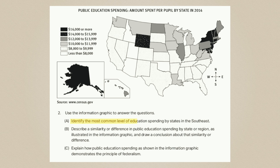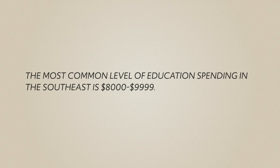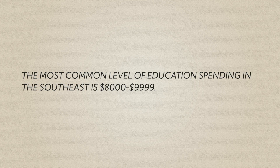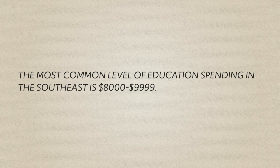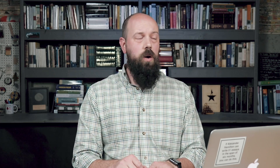Part A says: identify the most common level of education spending by states in the southeast. Don't overthink this one. When it asks you to identify, that's exactly what it means — just name something. If you can count, you'll be fine. The answer that will get the point: 'The most common level of education spending in the southeast is $8,000 to $9,999.' That's it. You just did what they asked.